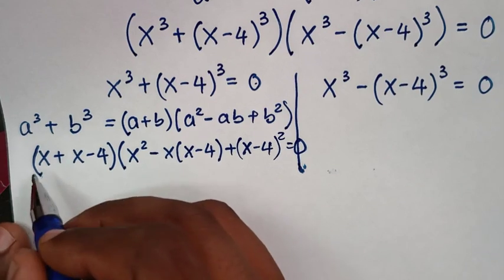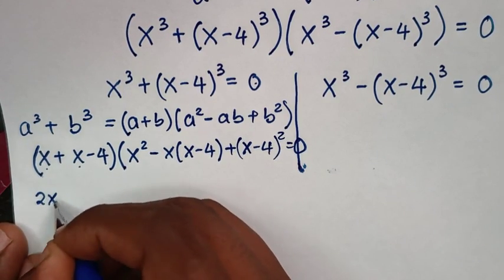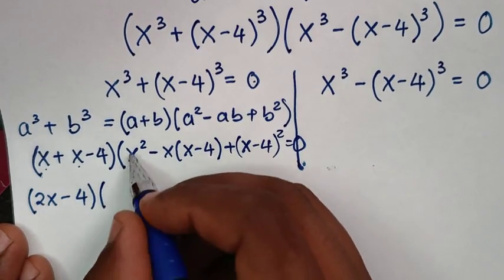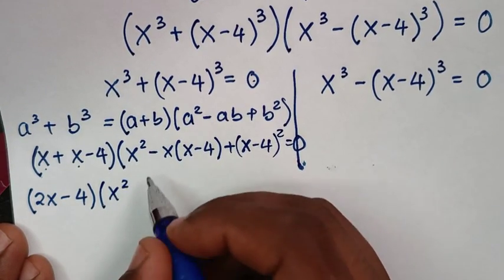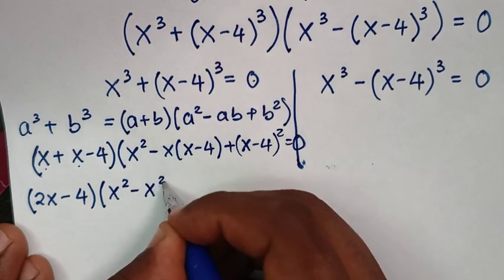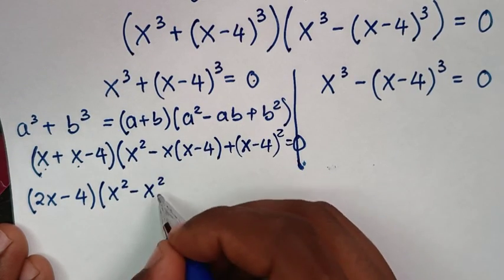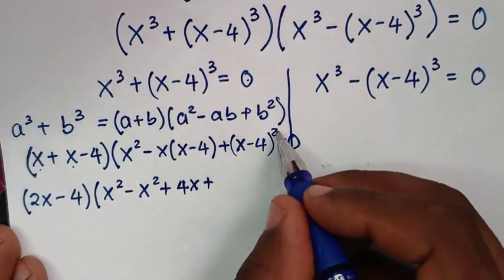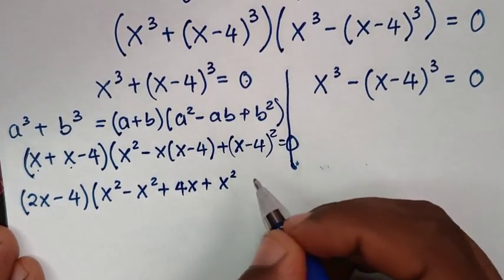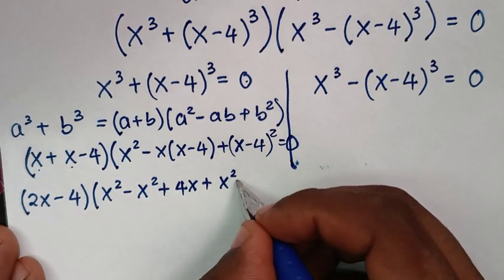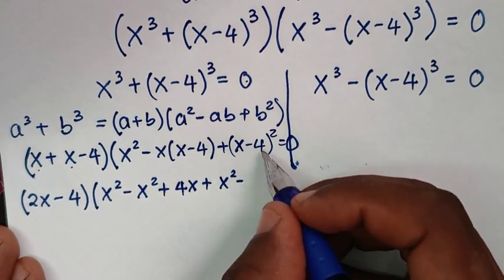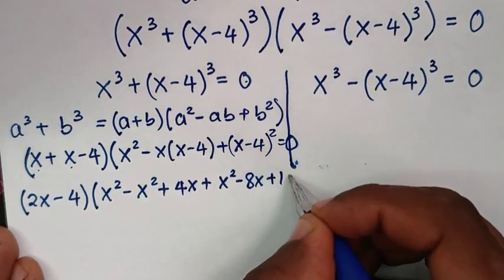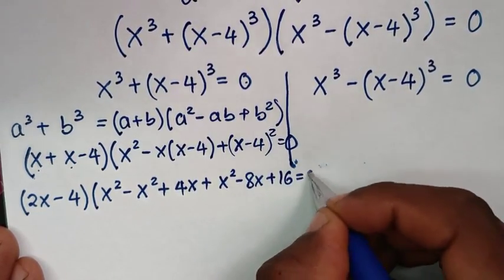In the next step, x plus x minus 4 is 2x minus 4. Expanding the second bracket: x squared, minus x squared (negative x times x), plus 4x (negative x times negative 4), then plus the square of (x minus 4) which is x squared minus 8x plus 16, is equal to 0.